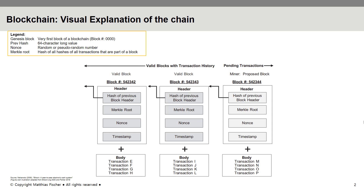These blocks contain, for example, the previous block's hash value, the Merkle root — which is the hash of all hashes of all transactions that are part of a block — and a nonce, which is a random number. With cryptocurrencies, this data is for example about coin balances or who sent a transaction to whom. Since this data is stored decentrally, every participant of a blockchain has to have a copy of the whole blockchain on their device.